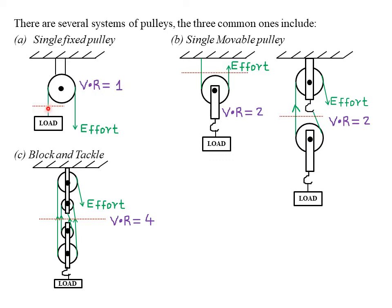The number of ropes supporting the load in a single fixed pulley is only one. The effort only contributes to the number of ropes supporting the load if it is acting in a direction opposite to the direction in which the load is moving — that is, if it is acting upward, or in a direction opposite to the direction of gravity. Since gravity always acts downwards, and in this case the effort is also acting downwards, the effort rope does not contribute to the velocity ratio. Therefore, the rope supporting the load is only one rope, and the velocity ratio equals 1.